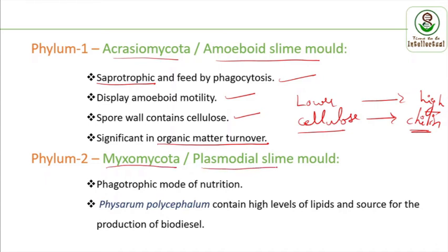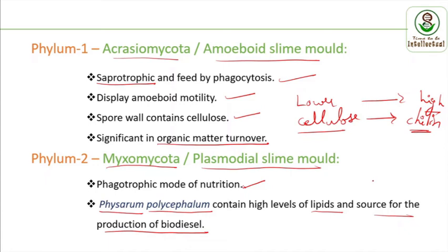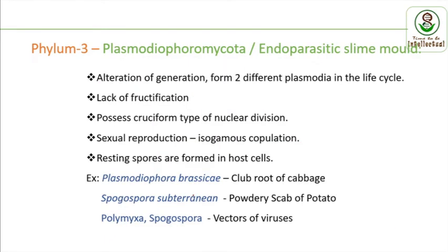The next phylum is Myxomycota, or plasmodial slime molds. They have a phagotrophic mode of nutrition, absorbing food. A very important organism is Physarium polycephalum, which contains high levels of lipids and is a source for the production of biodiesel. Just remember this organism and its association with Myxomycota and biodiesel production.